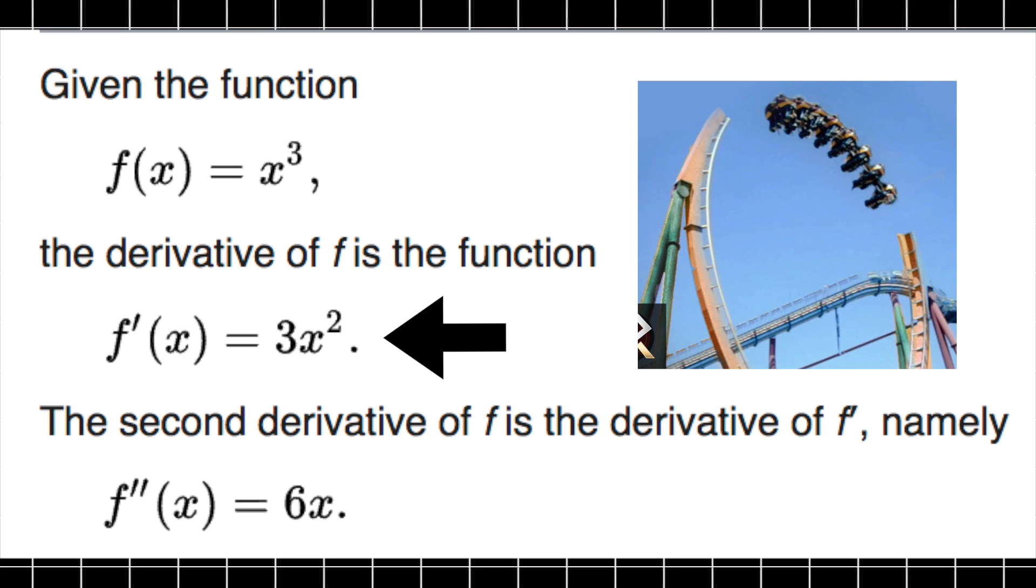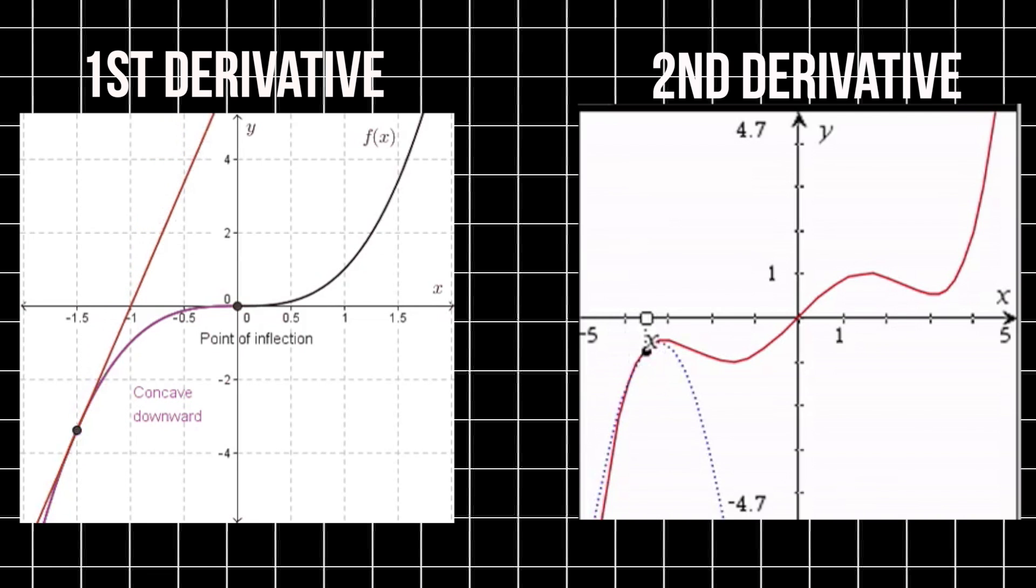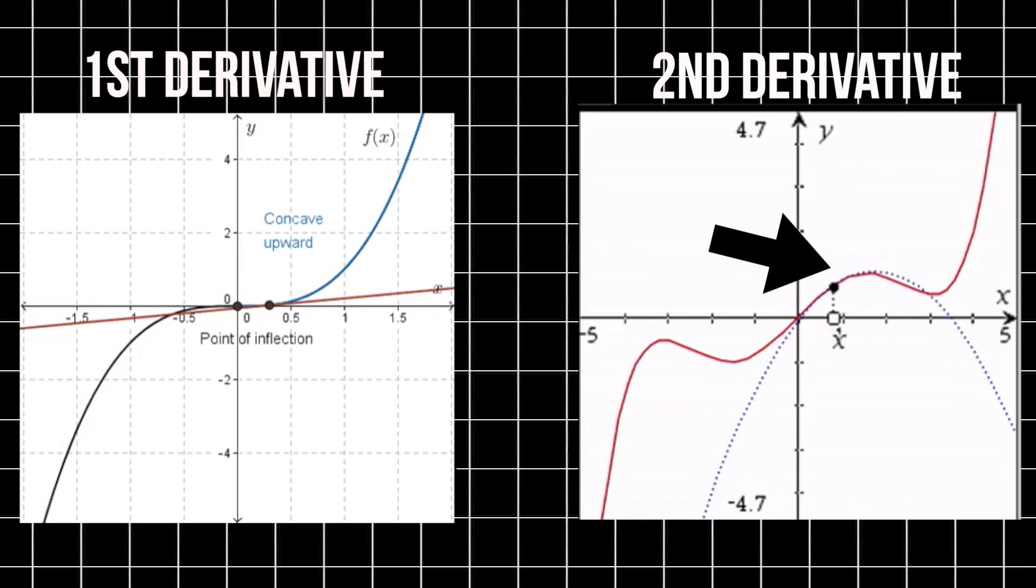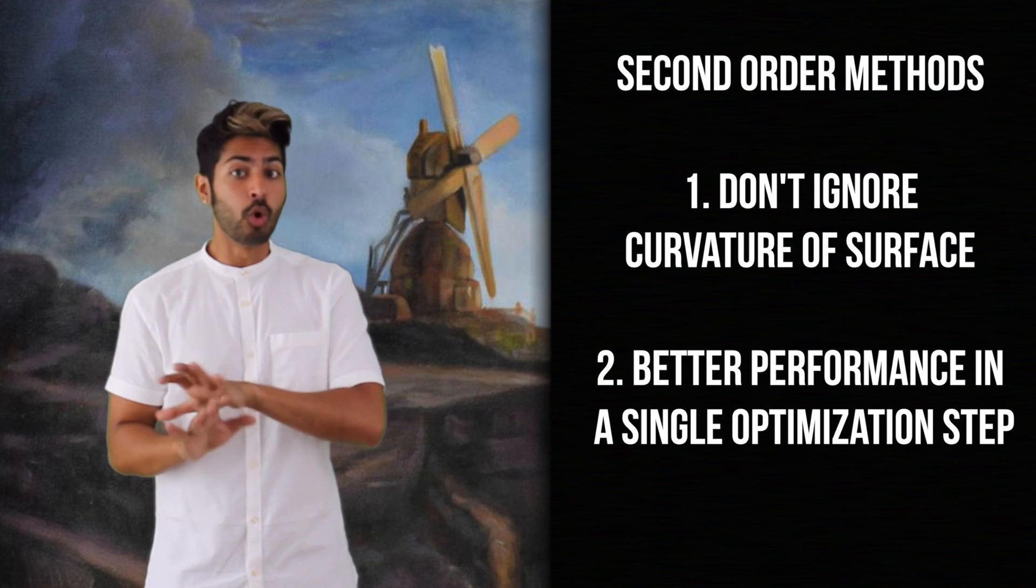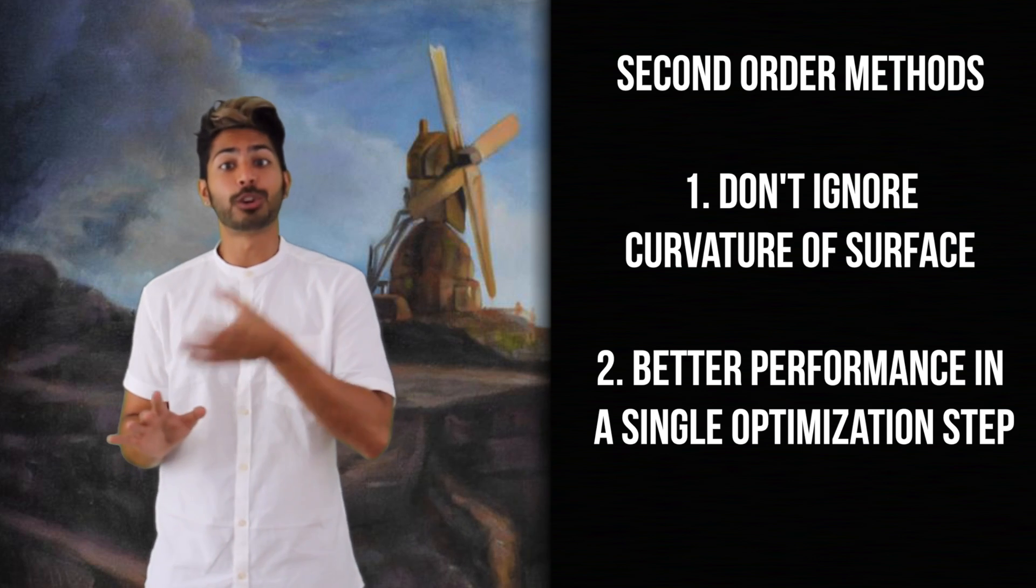which hints at its curvature. First-order methods provide us with a line that is tangential to a point on an error surface. And second-order methods provide us with a quadratic surface that kisses the curvature of the error surface. Ha! Get a room, you two. The advantage, then, of second-order methods is that they don't ignore the curvature of the error surface.